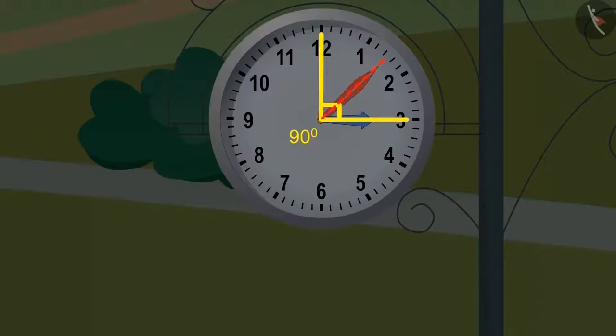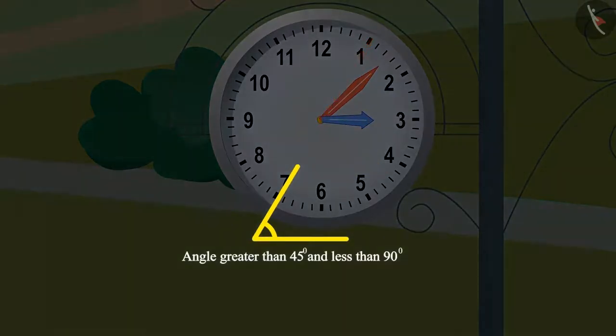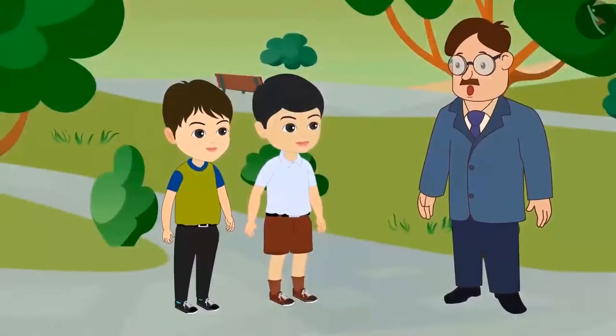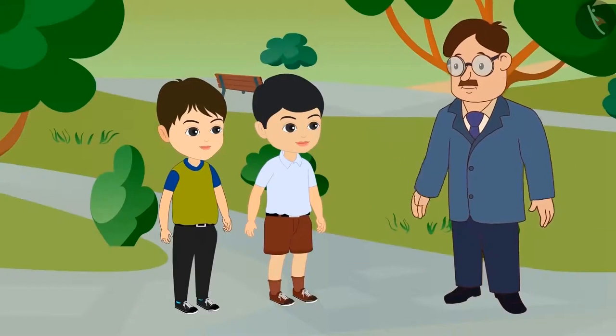That means the angle of 45 degrees is formed approximately between 5 minutes past 3 and 10 minutes past 3. That means the angle greater than 45 degrees and less than 90 degrees is formed at 5 minutes past 3. Oh, wow, Golu, your guess is absolutely correct.